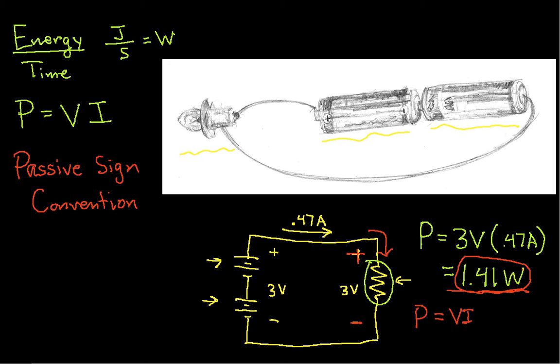On the other hand, if I look at the power that's being supplied by the batteries, the current flowing through the batteries is going from a lower potential to a higher potential. And so if I have the current flowing from minus to plus, then I would have power equals negative VI. This is the passive sign convention, and it allows us to determine whether a component is dissipating or supplying power.